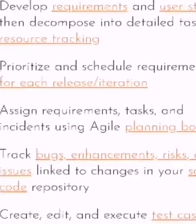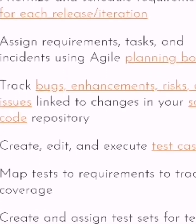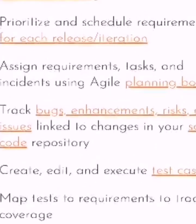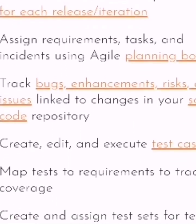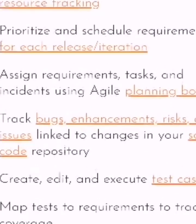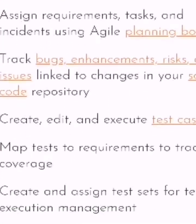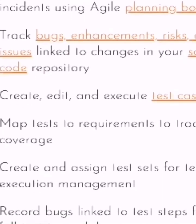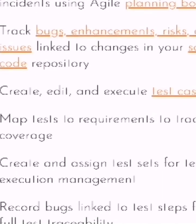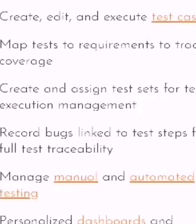Number one: systems that can develop requirements and user stories, then decompose into detailed tasks for resource tracking. Number two: prioritize and schedule the requirements for each release or iteration. Number three: assign the requirements, tasks, and incidents using an agile planning board.